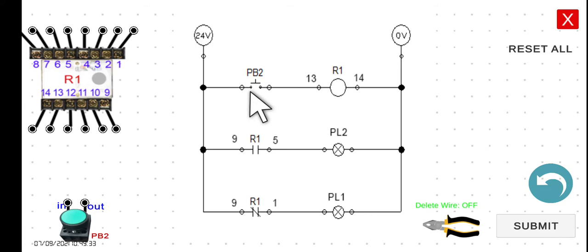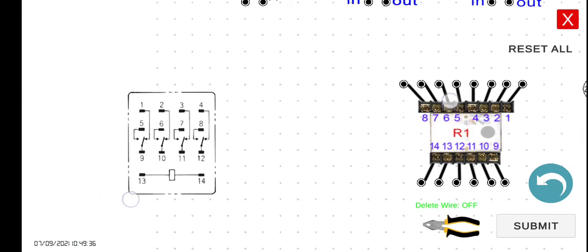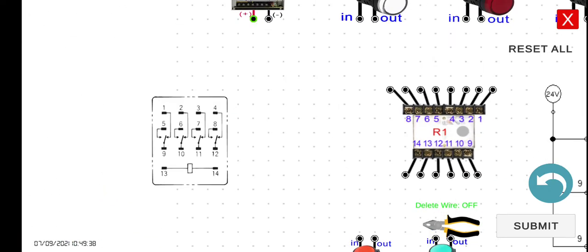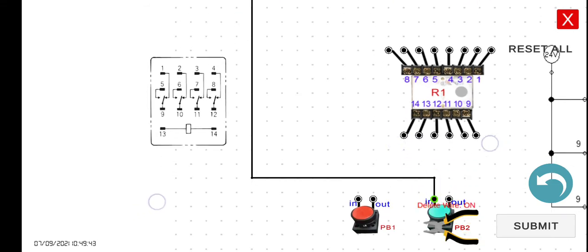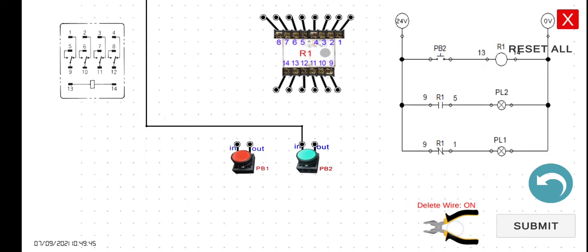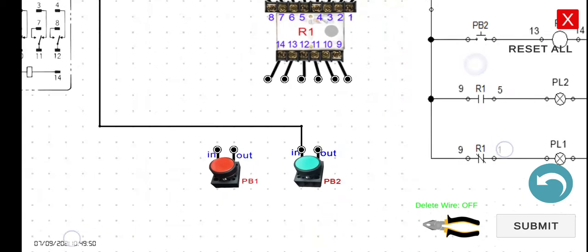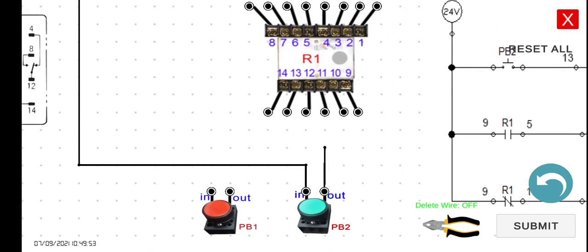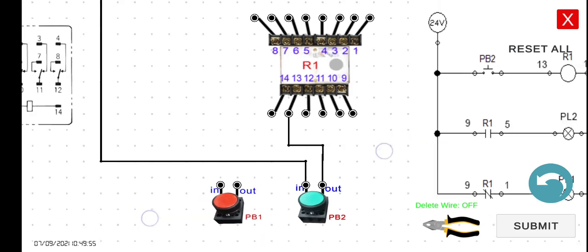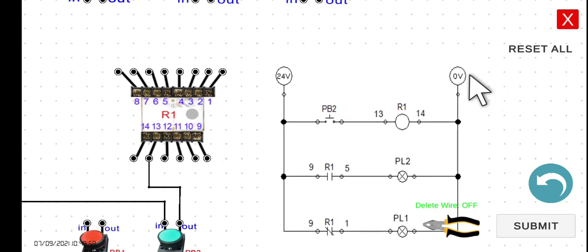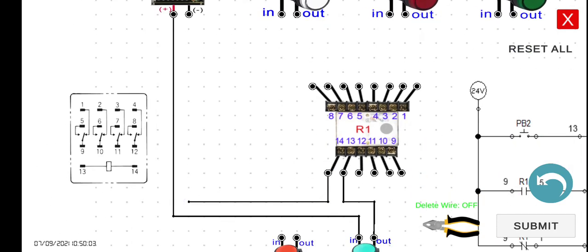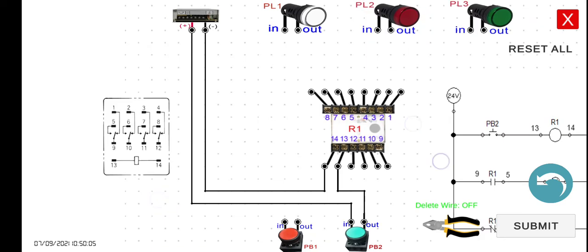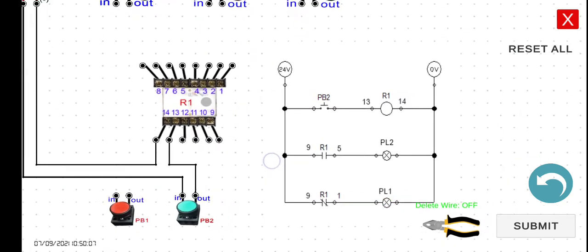Now let's connect the wires. Connect 24 volts to the input of PB2, then connect the output of PB2 to terminal 13. This is very similar to what we did in the previous activities. Then connect terminal 14 back to the zero-volt (negative) terminal of the power supply. That completes the first rung.